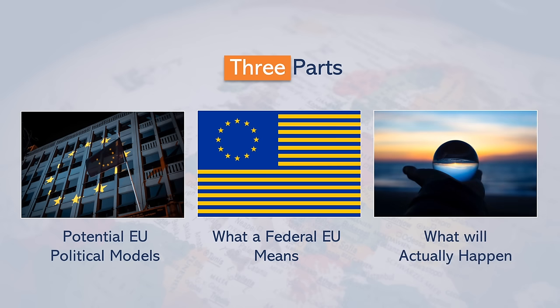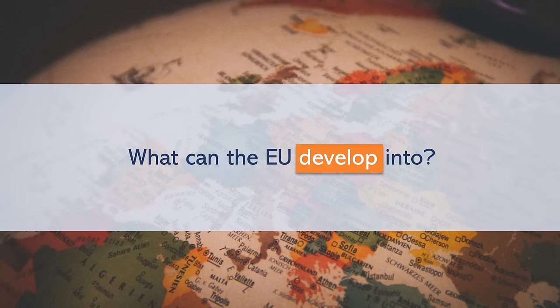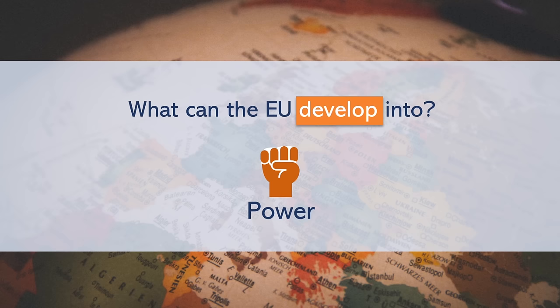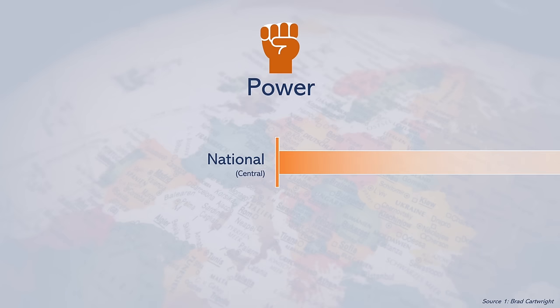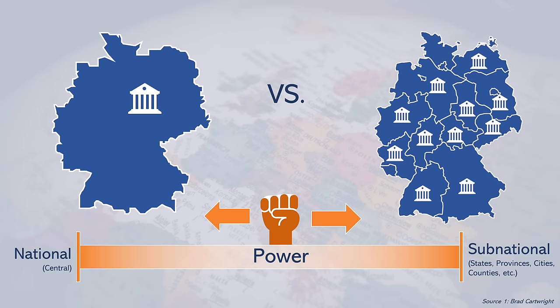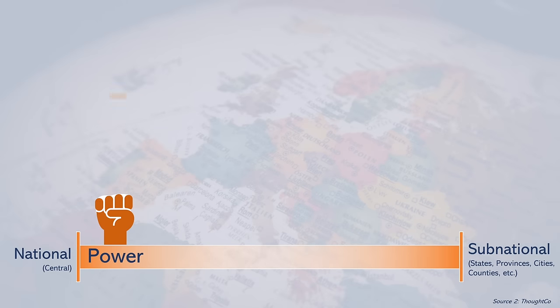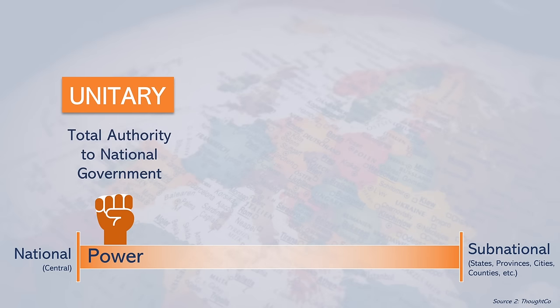To start off with, what are the political systems the EU could develop into? Before we can answer this, we need to look at power distribution — how political power is distributed between the national level and the subnational level, meaning a country's national parliament versus its regional parliaments. On the one end, there's the unitary model of government, where the national government has total authority over all the country's subnational regions.